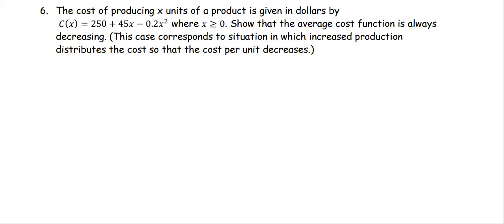In this example, the cost of producing x units of a product is given in dollars by C(x) = 250 + 45x - 0.2x², where x ≥ 0. Show that the average cost function is always decreasing. This case corresponds to a situation in which increased production distributes the cost so that the cost per unit decreases.